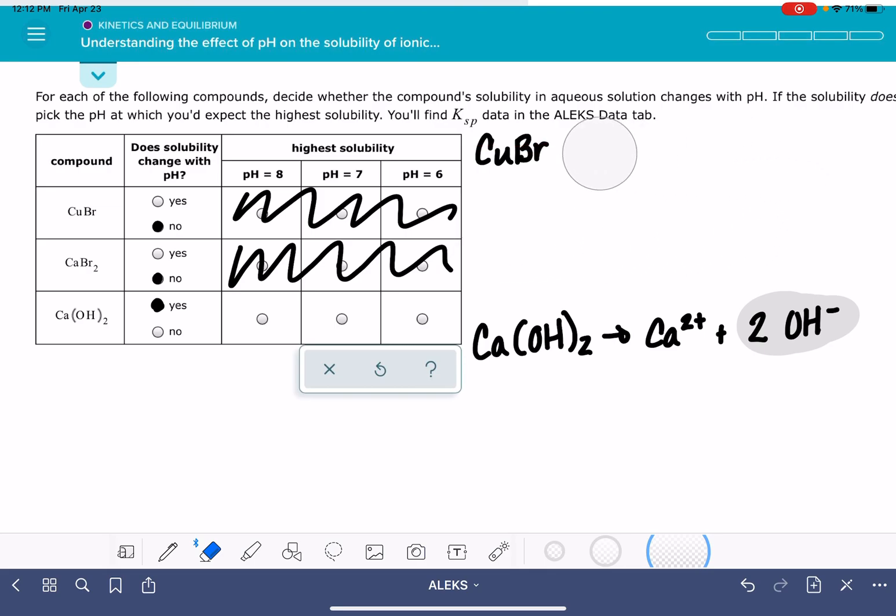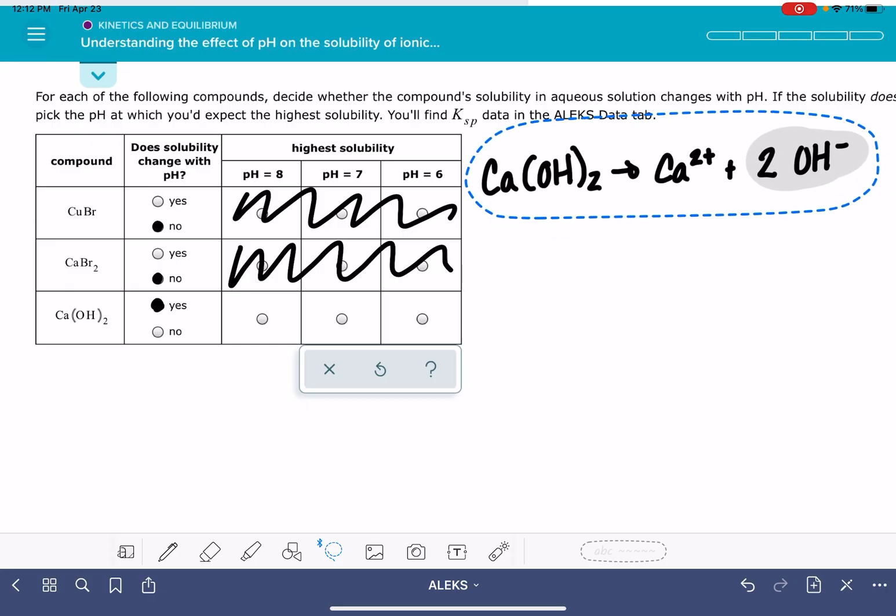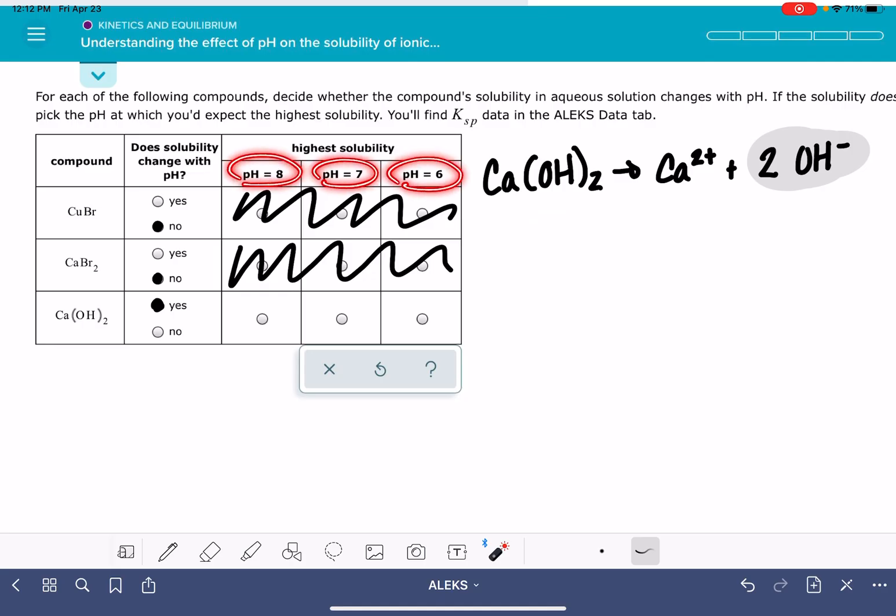So the highest solubility question was a little bit confusing in the way that it was worded to me initially. I thought that it literally meant what pH would give me the highest solubility. It just means among the three pHs that are provided, eight or seven or six, which of those three pH values would I have the highest solubility of my calcium hydroxide solution?